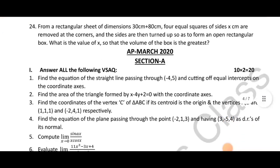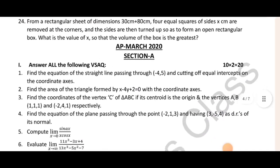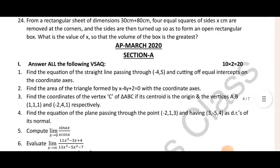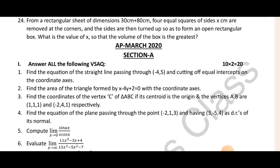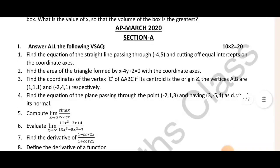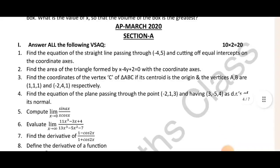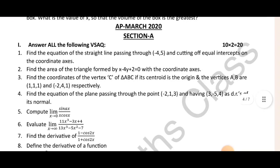Next — March 2020 EPP paper. Cutting of equal intercepts, state lines, core index, area of triangle idea — second question.